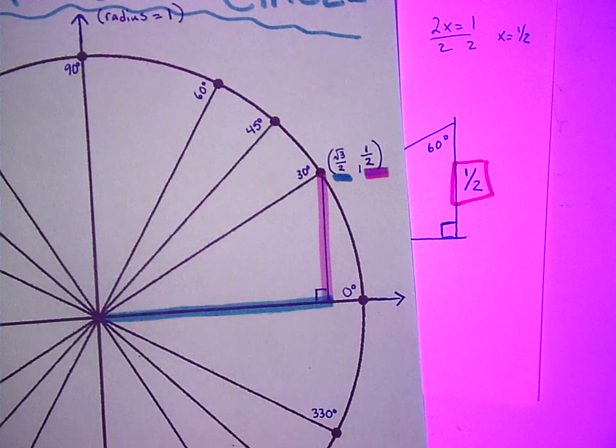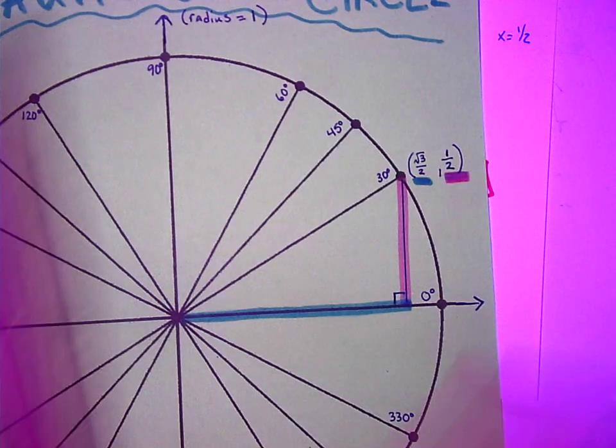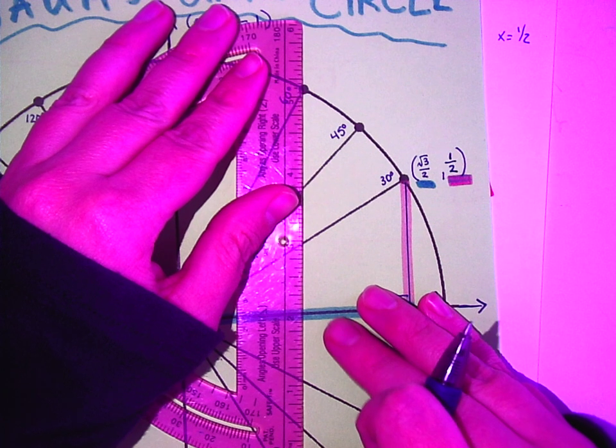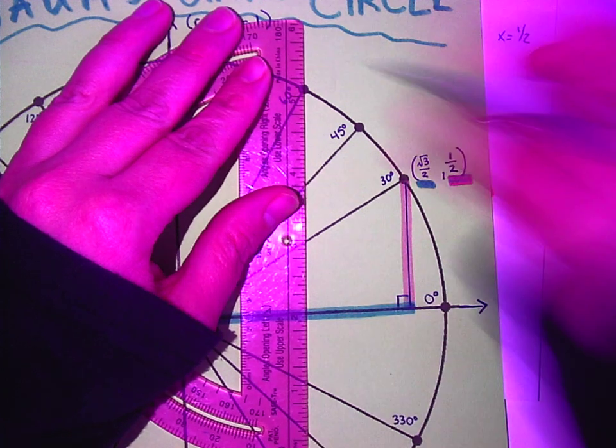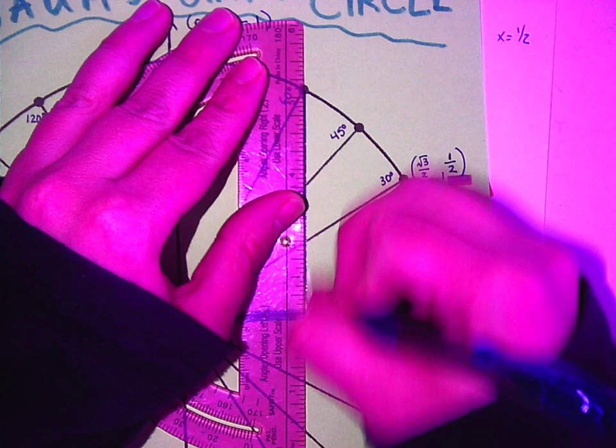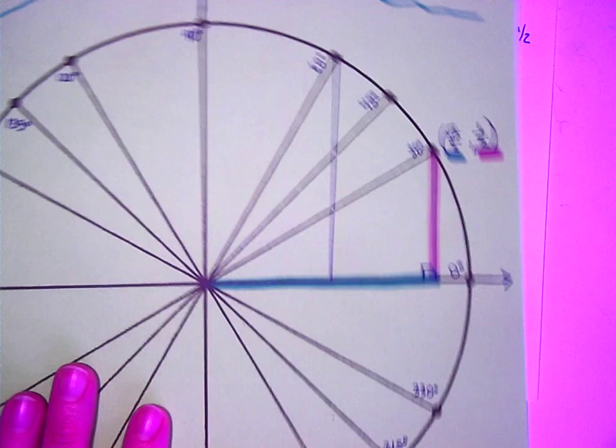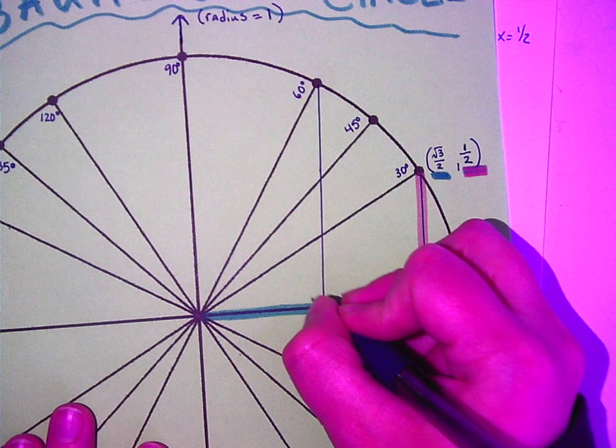Now, while we're at it, because we just did a 30, 60, 90 triangle, now we're going to do the exact same triangle except for this time we're talking about the 60.